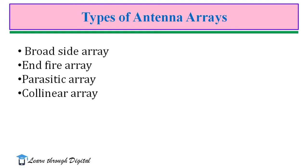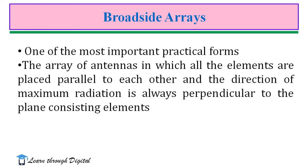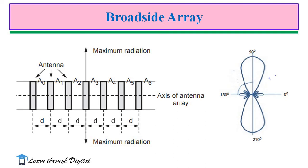We are going to discuss each one. The first, most important and simple form of array is the broadside array. A broadside array is an array of antennas in which all elements are placed parallel to each other and the direction of maximum radiation is always perpendicular to the plane containing the elements. This is the arrangement of a broadside array, where elements are equally spaced. These are antenna elements A0, A1, A2, A3, A4, equally spaced at a distance C.